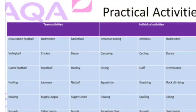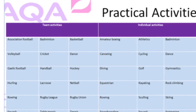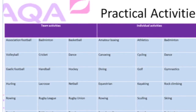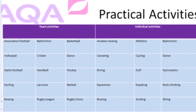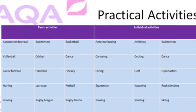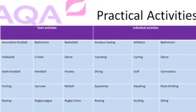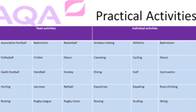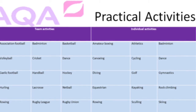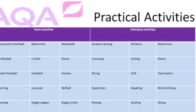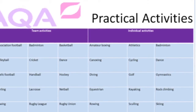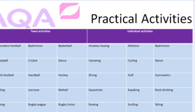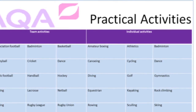Within GCSE PE you are assessed across a range of practical activities, and we look at your strongest three scores in order to submit them to the exam board. These must be one team sport, one individual sport, and your third can be either a team or individual sport. Within these, they are assessed out of 25: 10 marks for skills and 15 marks for what's called full context, i.e. how you perform within that particular activity.